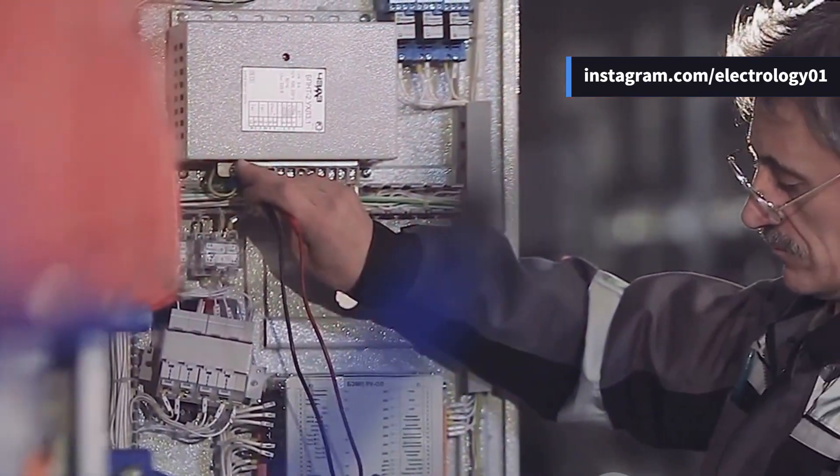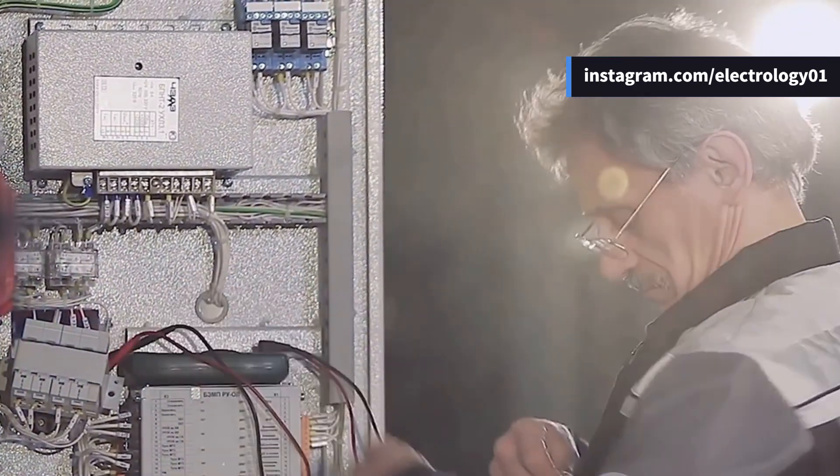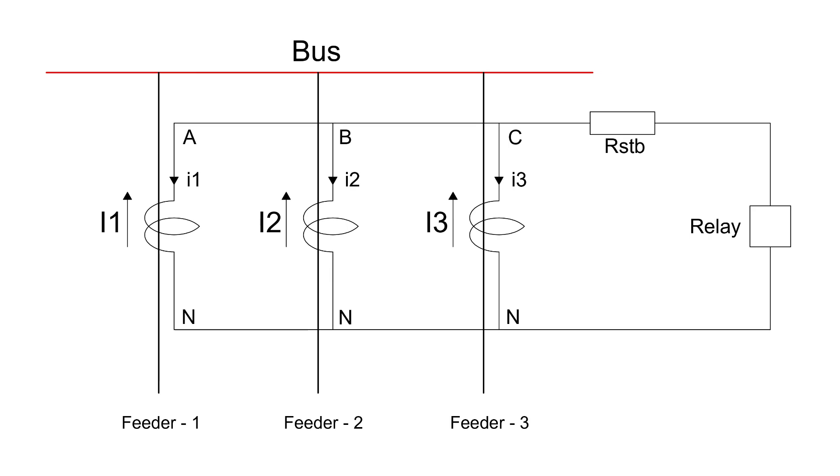Before we dive into the calculation part, let's first understand the purpose of the stabilizing resistor in high impedance differential protection. The stabilizing resistor is used to prevent the operation of the relay in case of a through fault. A through fault is a fault that occurs outside the zone of protection.